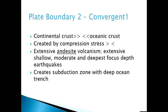Convergent boundaries also have a fingerprint — volcanoes and earthquakes — but it's different. You can't just memorize that plate boundaries have volcanoes and earthquakes. Here, a different type of volcanic rock erupts: andesite. The classic example is the Andes Mountains of South America — the rock is named for them. The earthquakes are also different: still shallow, but also moderate depth, and in fact the deepest earthquakes on planet Earth. Instead of a mid-ocean ridge, we have a subduction zone and a deep ocean trench.